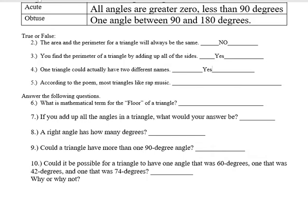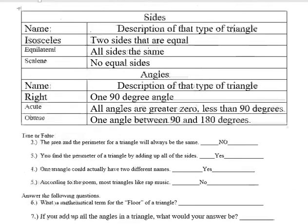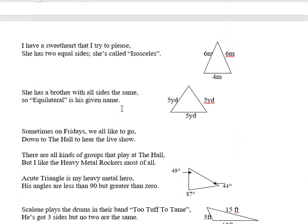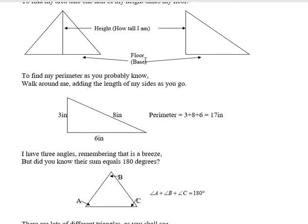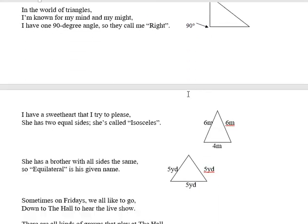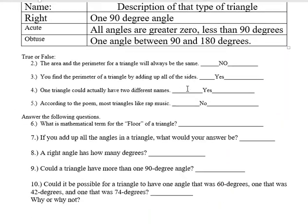And then according to the poem, most triangles like rap music. I don't think so. I think they were heavy metal. What is the mathematical term for the floor of a triangle? So I took liberties here to get things to rhyme, but when you want to find the area, you actually need the base, which is what we call the floor or what it's sitting on. So the mathematical name for that would be base.